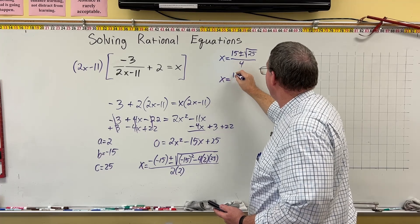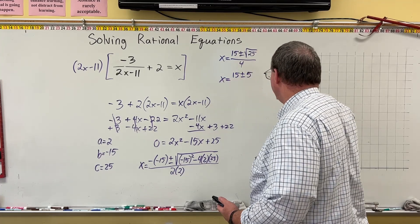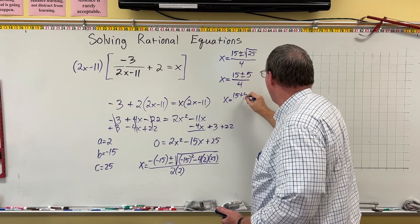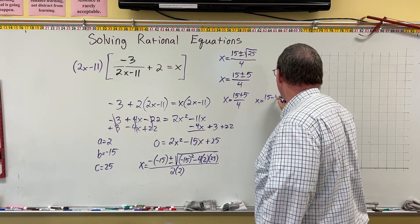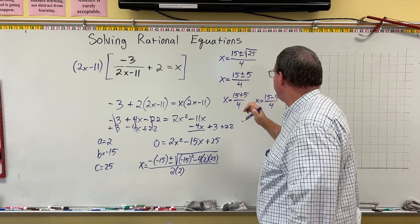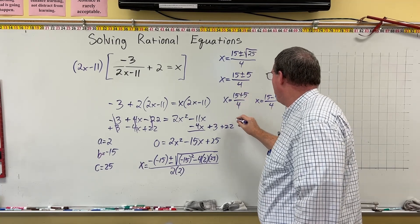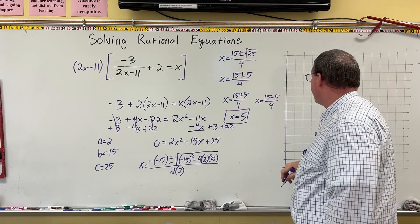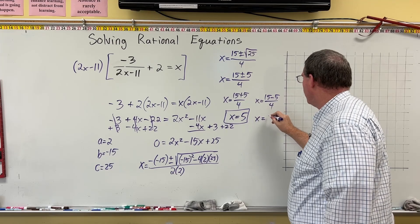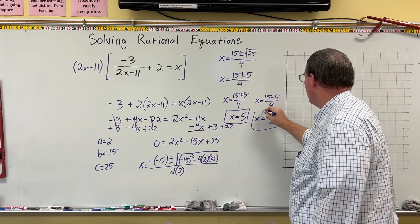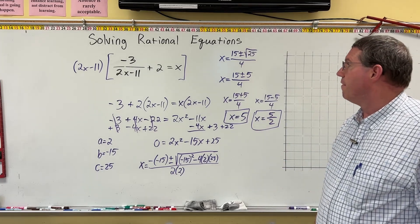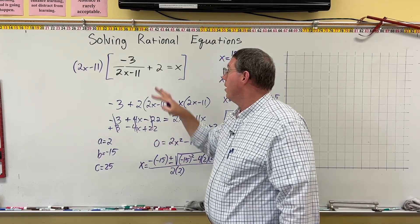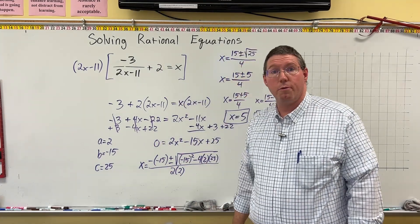So we have x is equal to 15 plus or minus the square root of 25 is 5. All over 4. So we're going to have x is equal to 15 plus 5 over 4. And x is equal to 15 minus 5 over 4. Well, 15 plus 5 is 20. 20 divided by 4 is 5. So one of our answers is 5. 15 minus 5 is 10. 10 divided by 4 reduces to 5 over 2. So one of our solutions is 5 and the other solution is 5 over 2. And the reason we came up with two solutions is because we wound up with turning this into a quadratic.